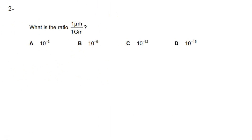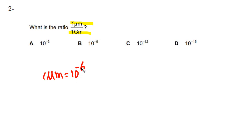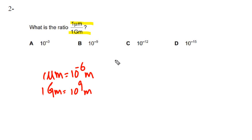For this question we need to understand what exactly is one micrometer and what exactly is one gigameter. One micrometer is equal to 10 to the power of minus 6 meters, and one gigameter is equal to 10 to the power of 9 meters.